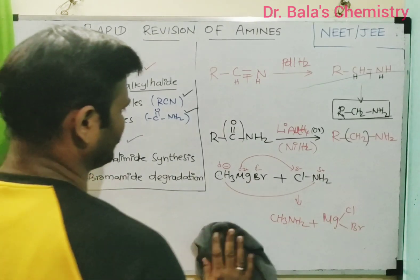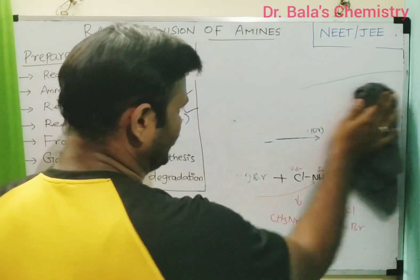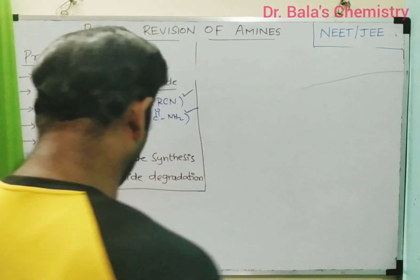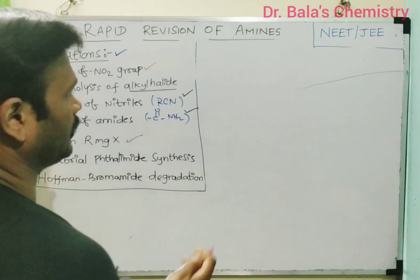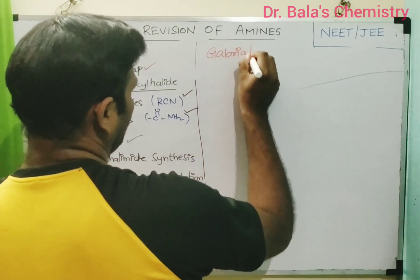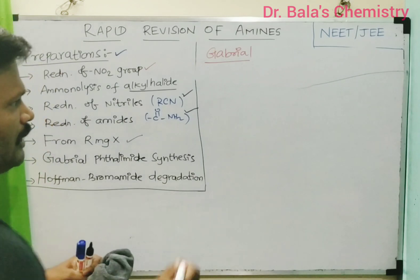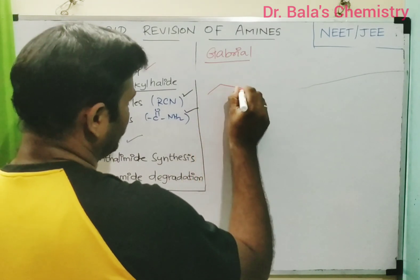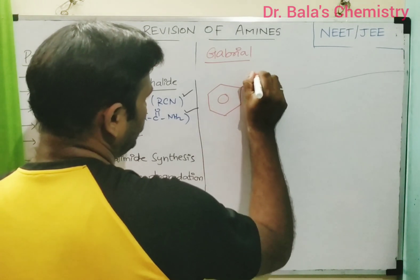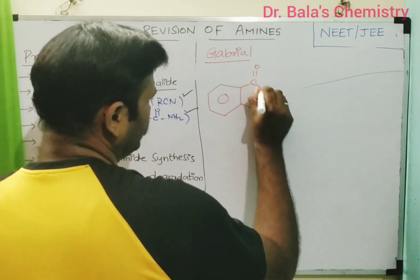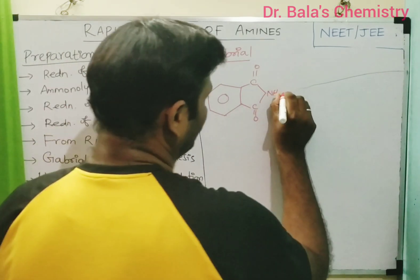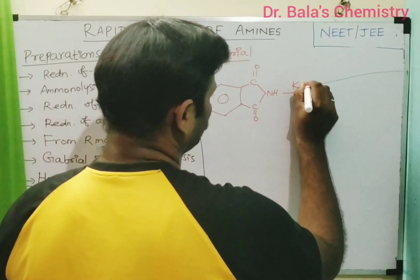Gabriel phthalimide synthesis: using this method, we can prepare only aliphatic primary amines — we cannot prepare aromatic amines. In Gabriel phthalimide synthesis, phthalimide (phthalic acid imide) is the starting material — it has two C=O groups and an N-H group in a cyclic structure.